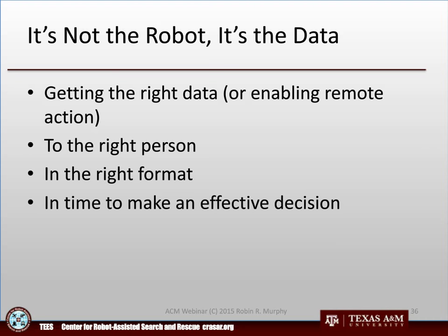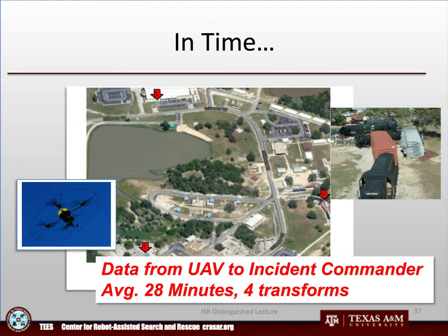Getting information in time is not trivial. In an exercise at a chemical train derailment, we flew a UAV a kilometer away from the accident — a realistic standoff distance — which was only another kilometer from the incident commander at our emergency operations training center. We ran the exercise four times. It took an average of 28 minutes from when the UAV team with the hazmat specialist said 'I want you to see this set of four images' to actually get it to the incident commander. Eventually we just learned to stop and drive over there to take a typical military platform output and get it into a format that a civilian response agency could use.